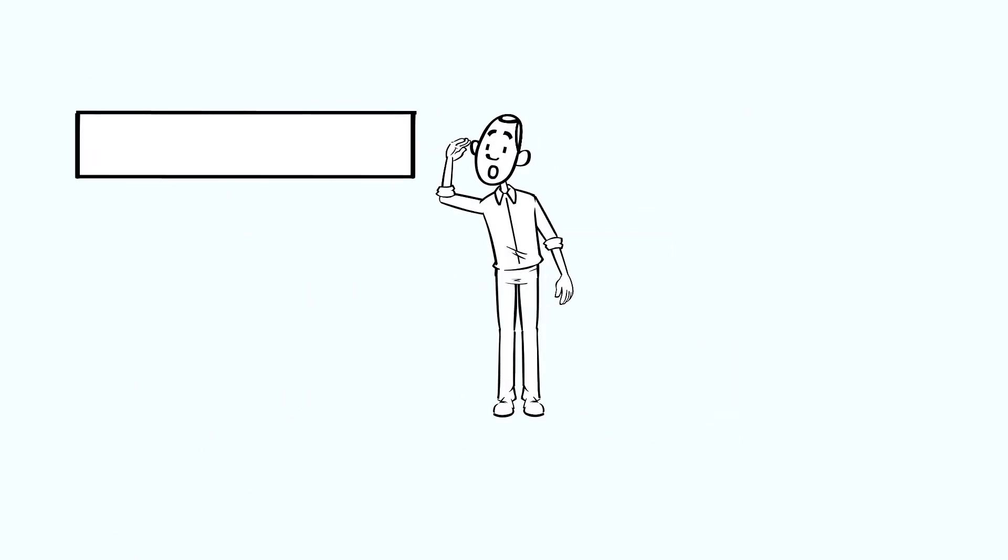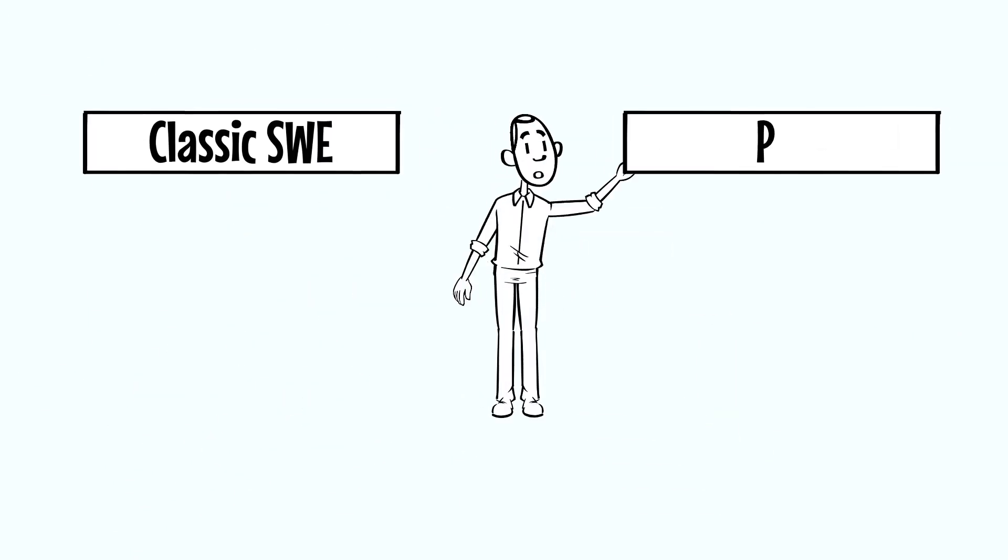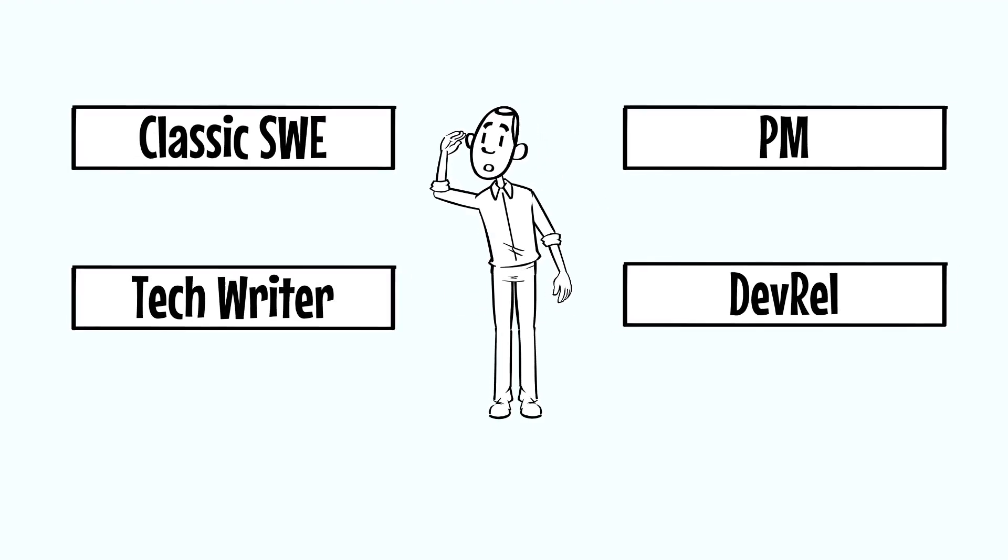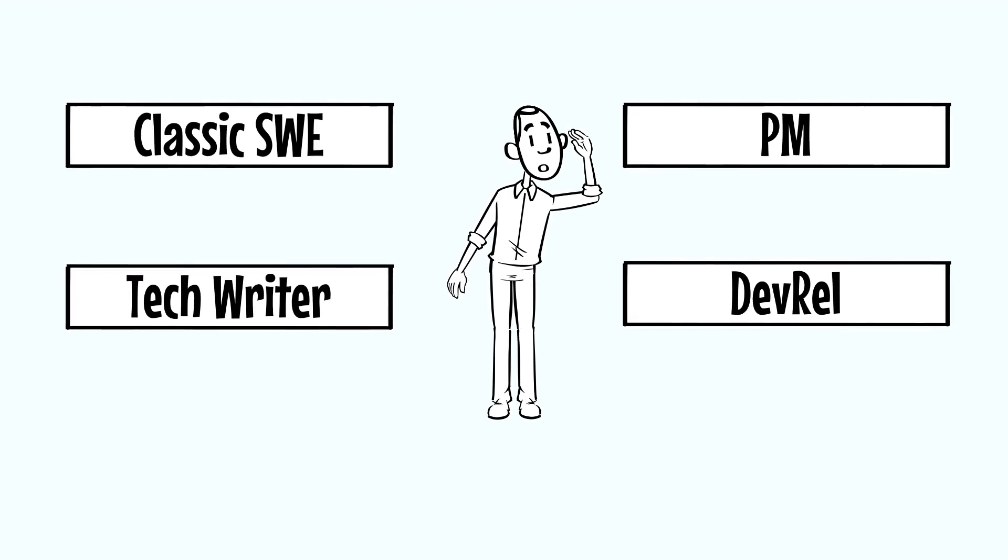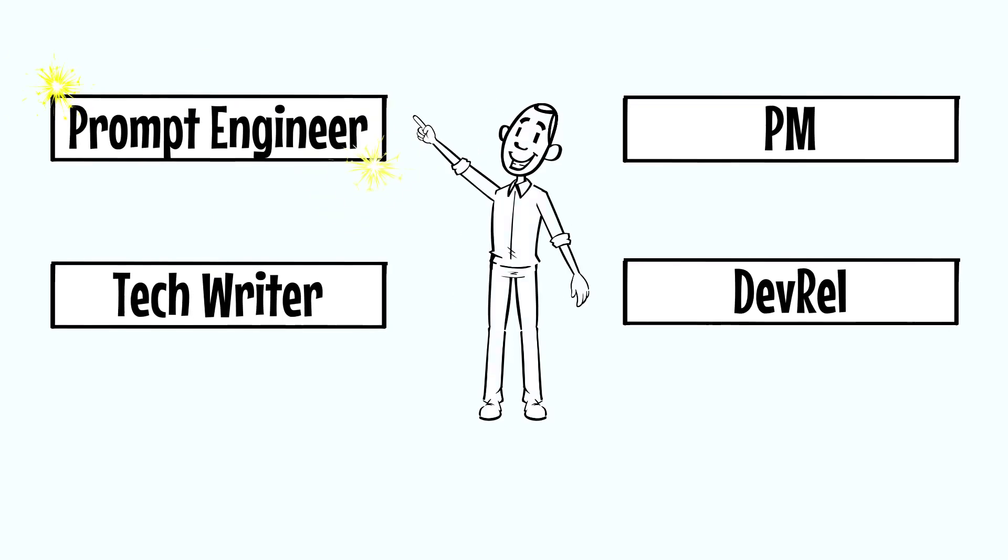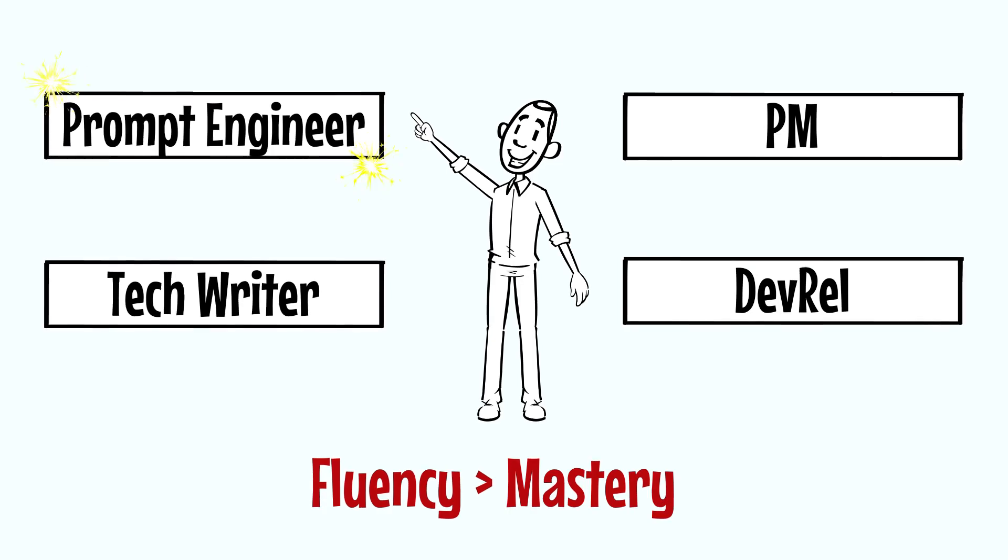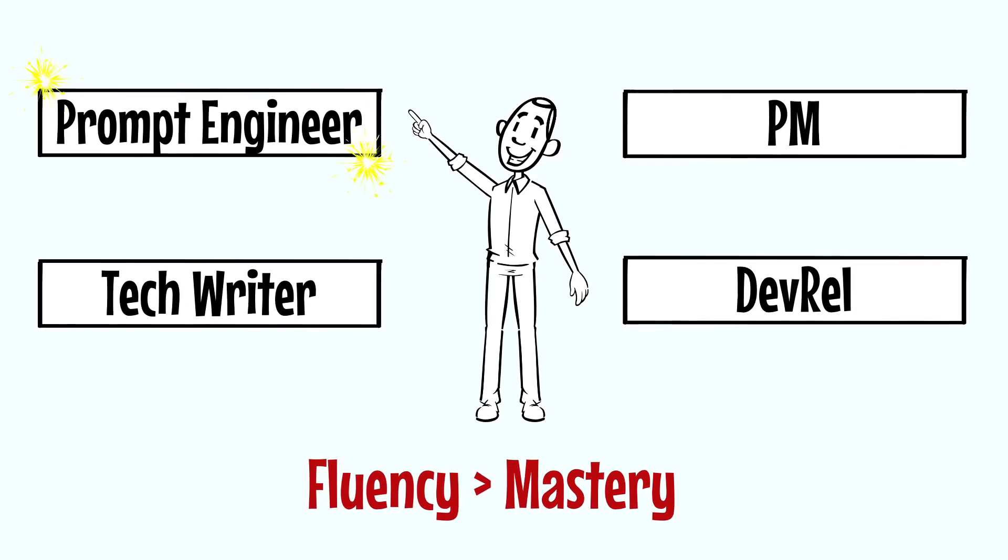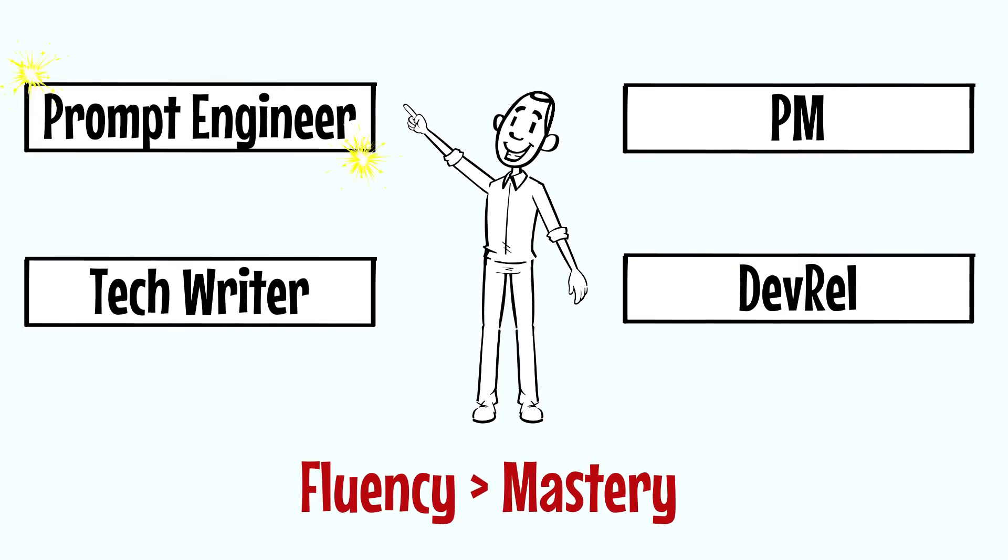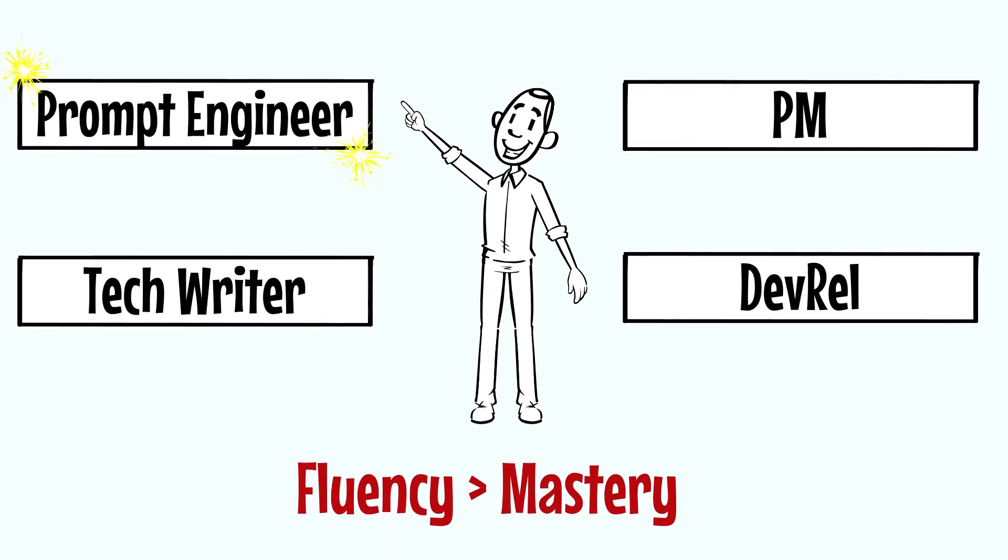The irony is that the most in-demand roles now are not even about hardcore CS theory. Product managers. Developer advocates. AI trainers. Technical writers. Prompt engineers. These roles need code fluency, not code worship. And they value storytelling as much as syntax. If you're only chasing SWE jobs, you're ignoring 60% of the actual opportunity.